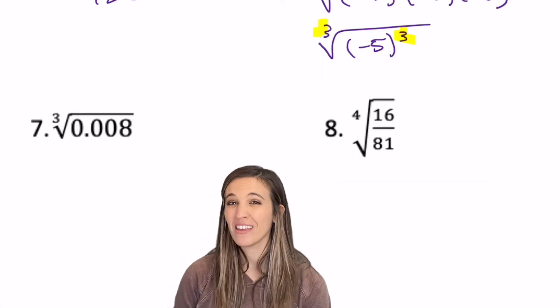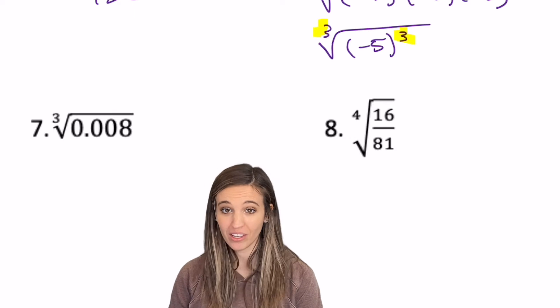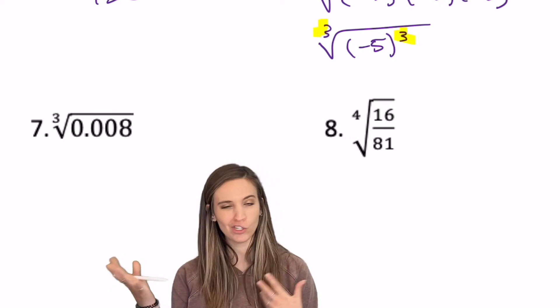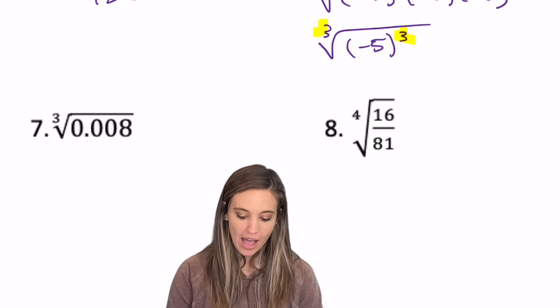On this next one, I'm taking the cube root of 0.008. Well, we don't want to use calculators here. So let's think about it. Let's just focus on the eight, the cube root of eight. Well, we know that's two. So if I have one, two, three decimal places,